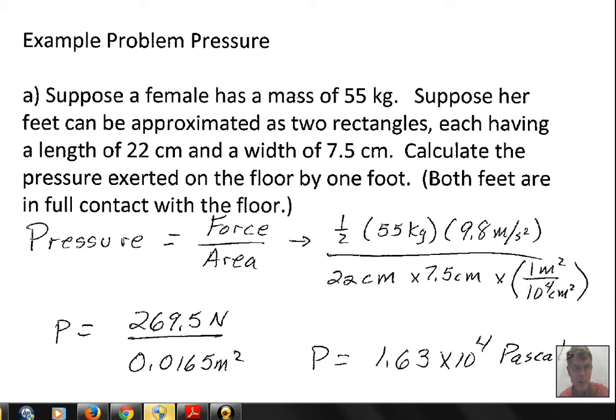Calculate the pressure exerted on the floor by one foot. So the person standing on the floor with two feet, the force of interaction between the feet and the floor on one foot will be half of the weight. The weight is mg, the mass of the person times acceleration due to gravity. The force at one foot will be half of the weight.